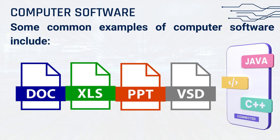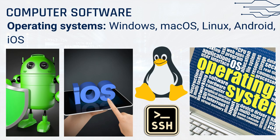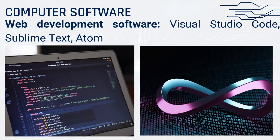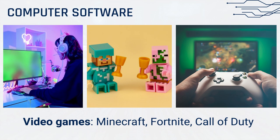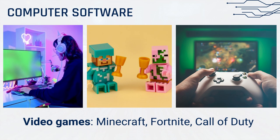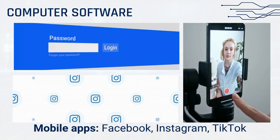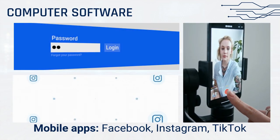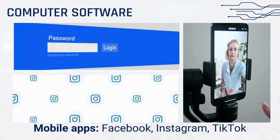Some common examples of computer software include operating systems — Windows, macOS, Linux, Android, iOS — web development software such as Visual Studio Code, Sublime Text, and Atom; video games like Minecraft, Fortnite, and Call of Duty; and mobile apps like Facebook, Instagram, and TikTok.